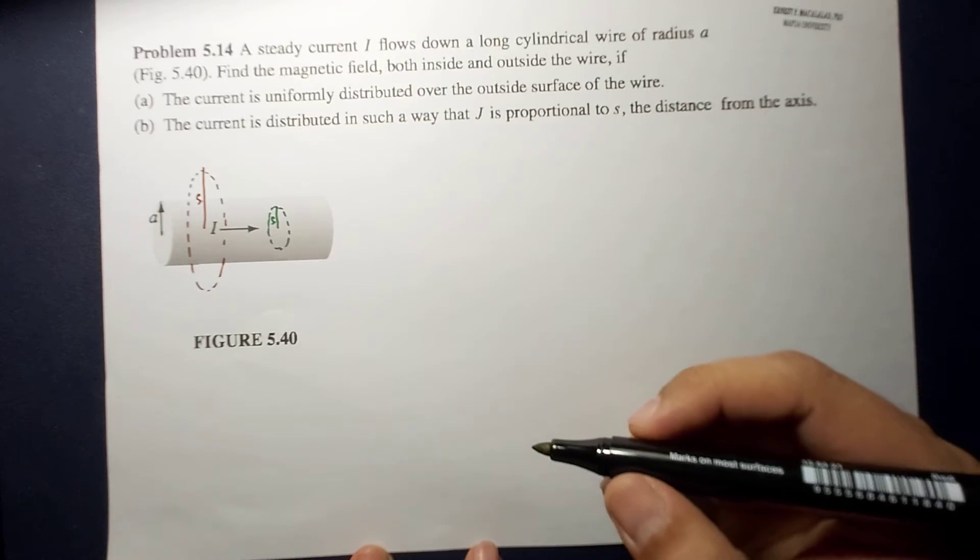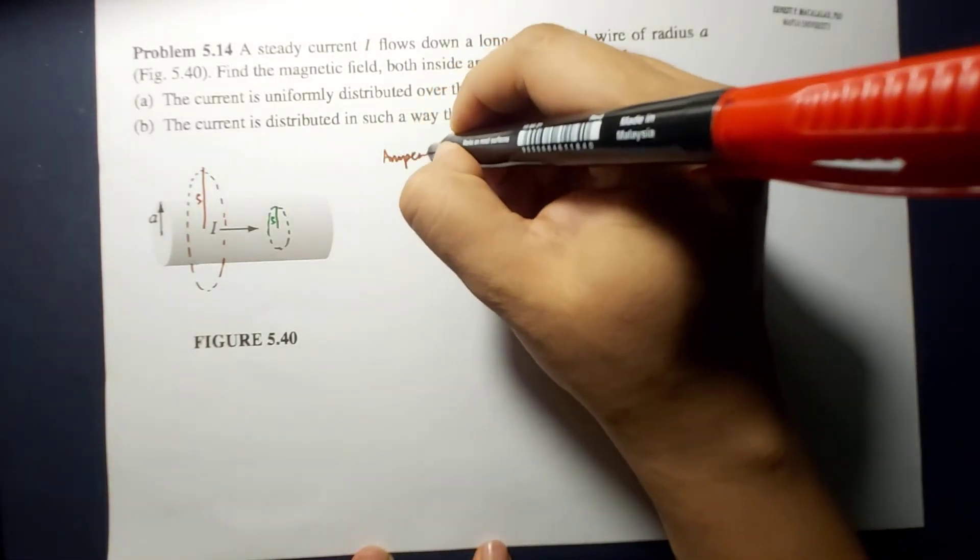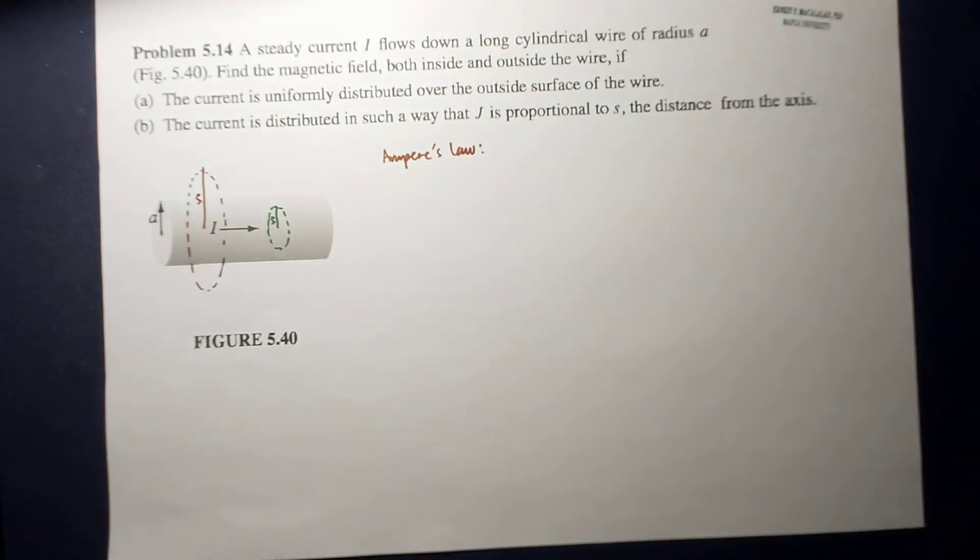it will look like a circular loop. So, generally, Amperian loop in integral form,